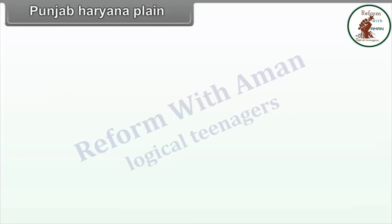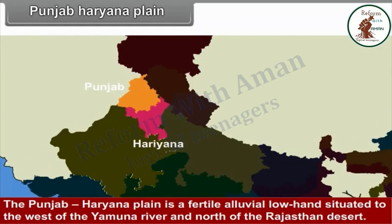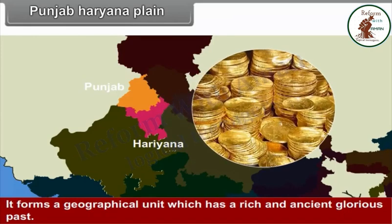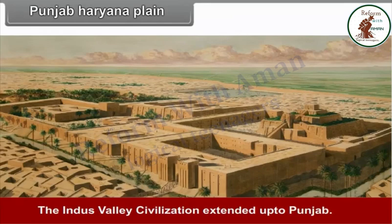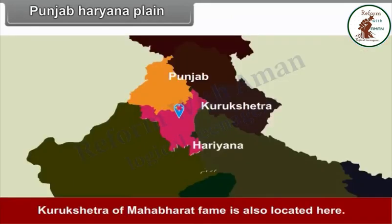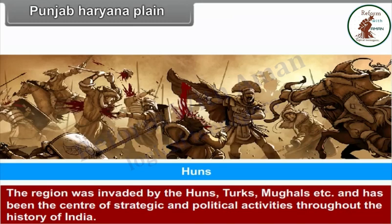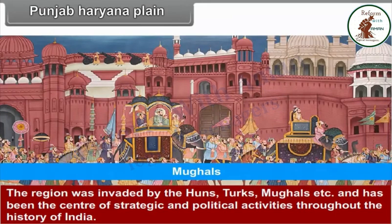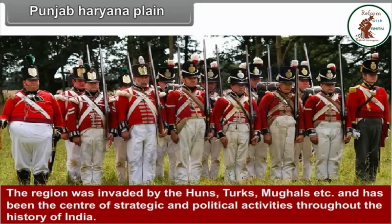The Punjab-Haryana plain is a fertile alluvial lowland situated to the west of the Yamuna River and north of the Rajasthan Desert. It forms a geographical unit which has a rich and ancient glorious past. The Indus Valley civilization extended up to Punjab. Kurukshetra of Mahabharata fame is also located here. The region was invaded by the Huns, Turks, Mughals, etc., and has been the center of strategic and political activities throughout the history of India.